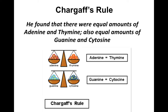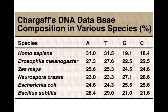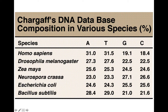Looking at actual findings across organisms: for Homo sapiens, about 31% A and T and 19% G and C. The fruit fly Drosophila melanogaster has about 27% and 22%. Corn (Zea mays) shows a similar pattern. Even E. coli and other bacteria follow the same rule. The percentages vary by organism but within each organism, A and T are approximately equal, as are G and C — so there's definitely a relationship between those bases.